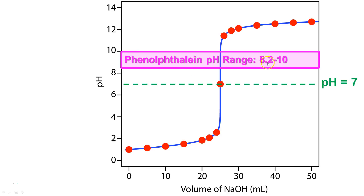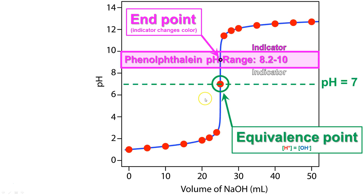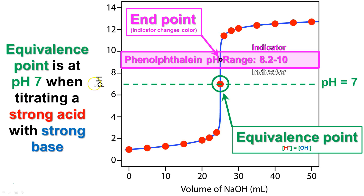Phenolphthalein changes color between the ranges of 8.2 and 10 on the pH scale. Anything below 8.2, phenolphthalein is going to be clear; above 8.2, it's going to be this bright nuclear pink. Right in the middle of that range is what we call the endpoint — the point at which the indicator changes color. The middle of the steep slope is my equivalence point, where the concentrations are equal. The equivalence point is always going to be at pH 7 when you're using a strong acid and a strong base.